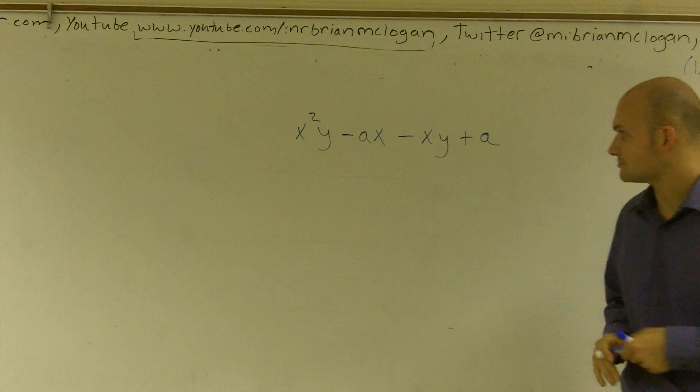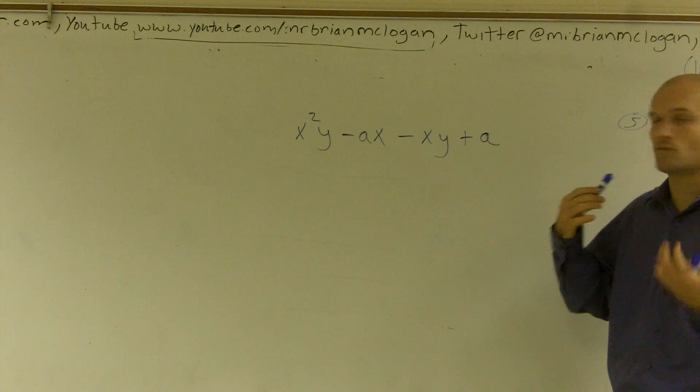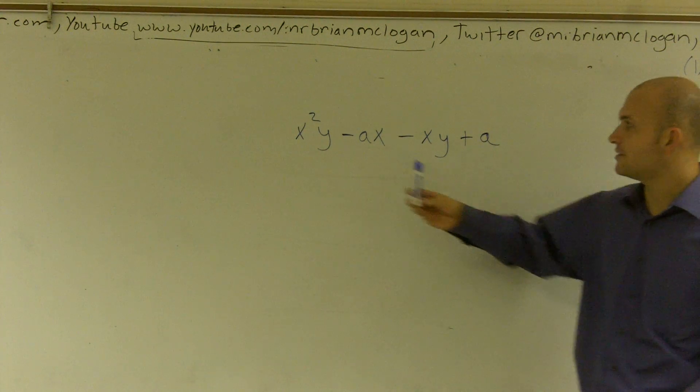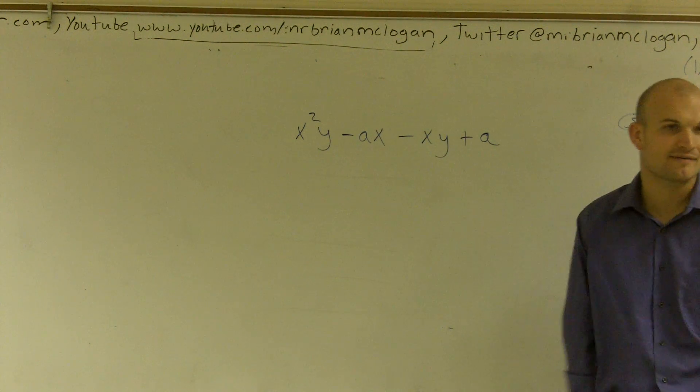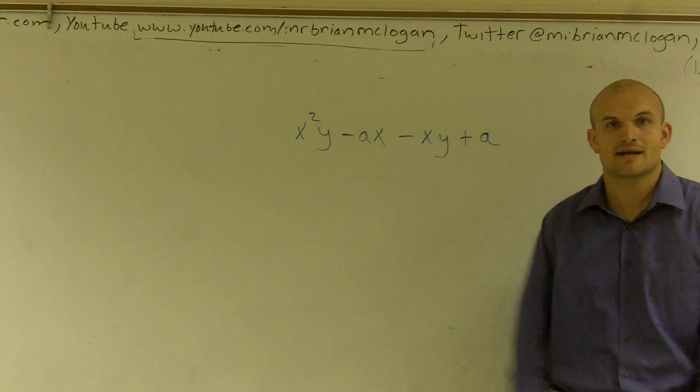When we're looking at this, you always want to see what can I pull out of everything. What do all these terms share? The first thing I look at - oh, they all share an x: x squared, an x, an x, and... this doesn't have an x. So therefore, I can't factor out an x, right?